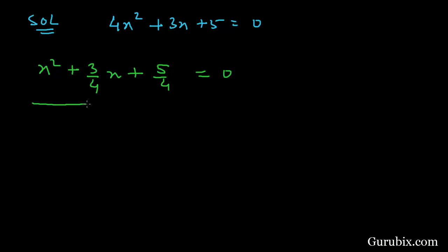Now we shall keep these two terms in the left hand side and take this 5 over 4 in right hand side. Then we have x square plus 3 over 4x equals to minus 5 over 4.